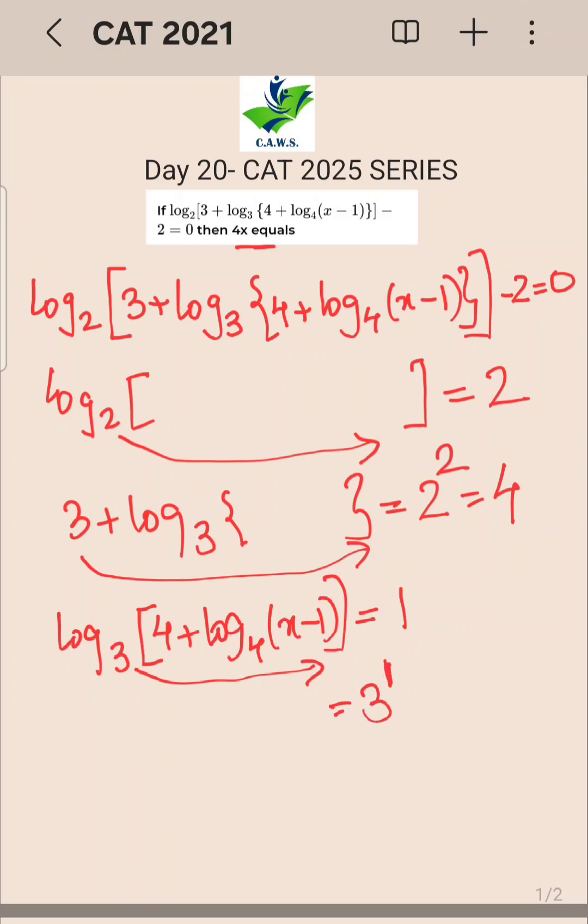The left hand side is 4 plus log to the base 4 of x minus 1. So this will become 3 minus 4 which is minus 1, equals log to the base 4 of x minus 1. Now take 4 on the other side, so this will become 4 raised to minus 1 is x minus 1.